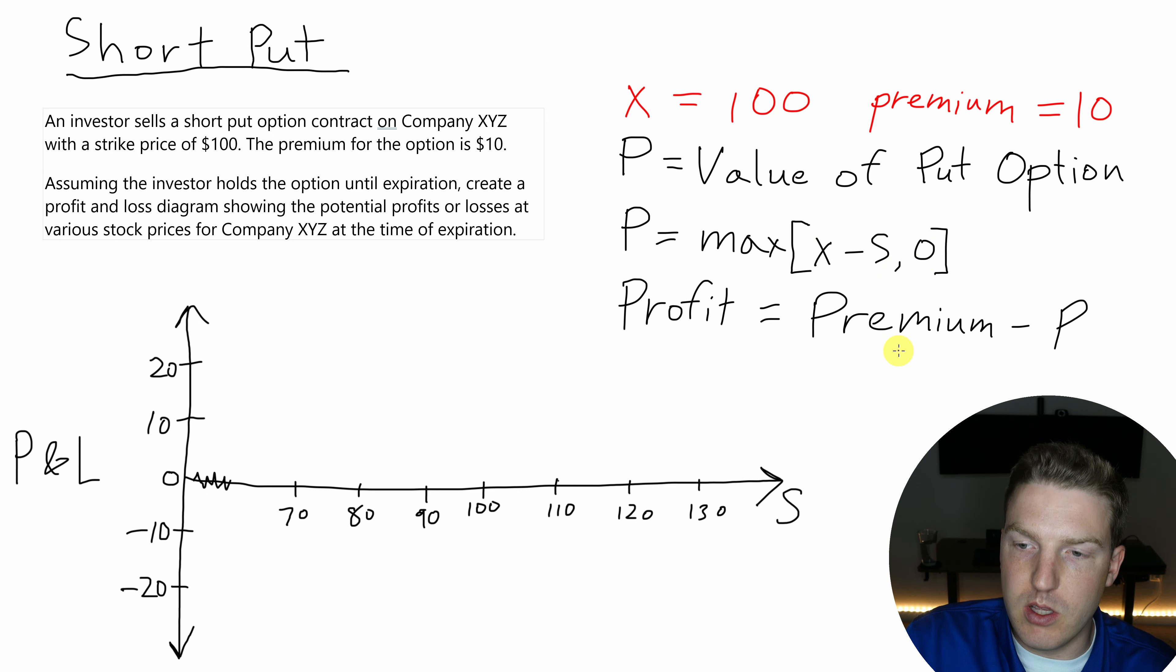The difference here, though, is just like when we were talking about the calls, this is swapped around. So now that we're short the put option, we actually profit if the premium is higher than the value of the put option. Whereas on the long side, they profited if the put option's value was higher than the premium. Now let's draw this payoff diagram.